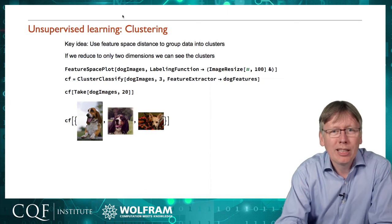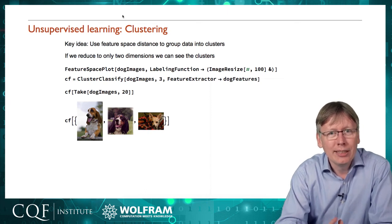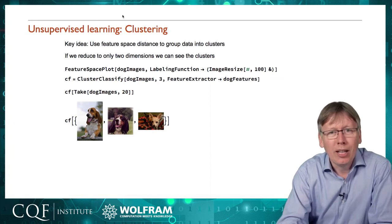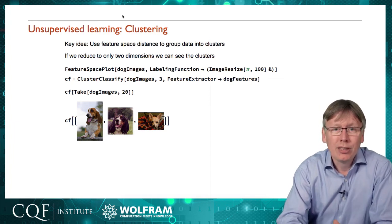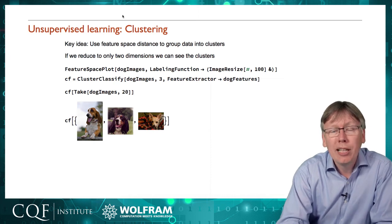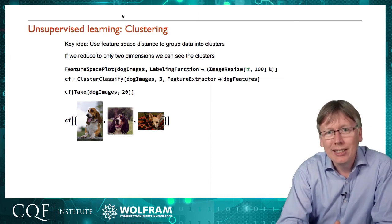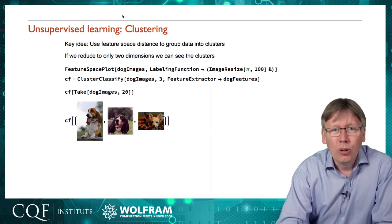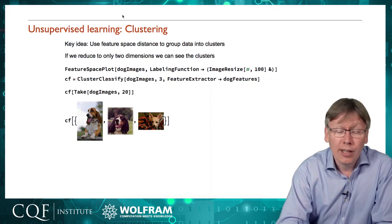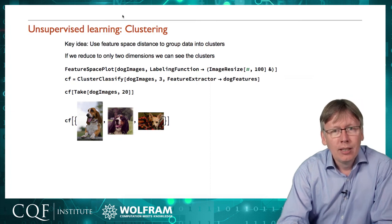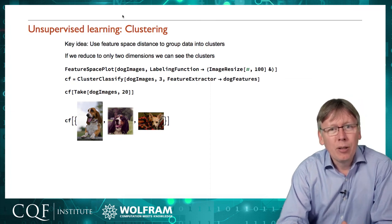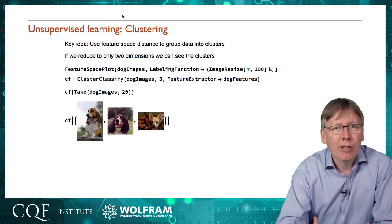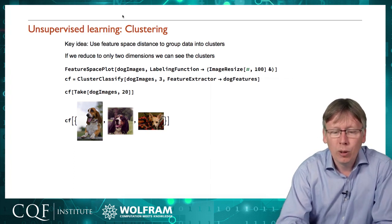Once we have this concept of measuring distances over feature spaces that have been learned from the data set, we've essentially solved the problem of unsupervised learning because all of those features were completely without human guidance. I didn't tell it that those were pictures of dogs or that there were three different breeds or what features to look for. It learned that for itself. All we need to do is to look now for items that are close to each other in the feature space and we can start inferring that they have some similarity in the real world.